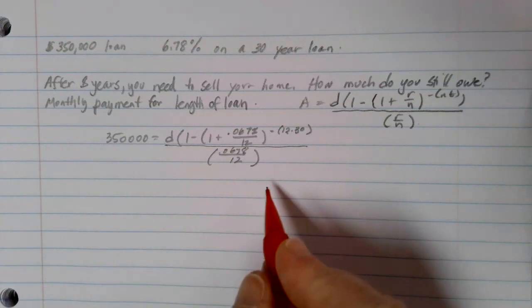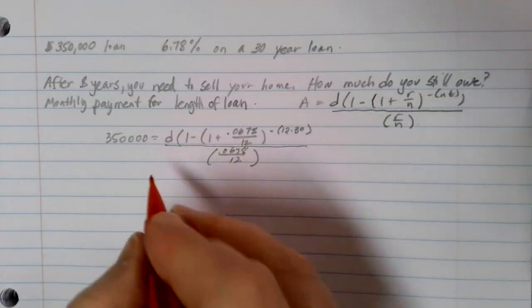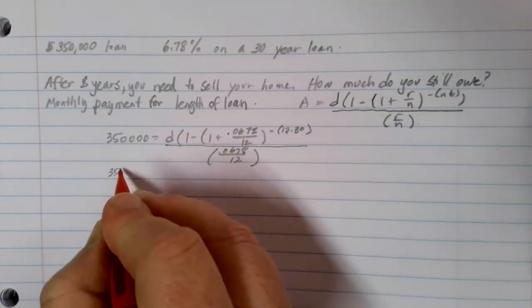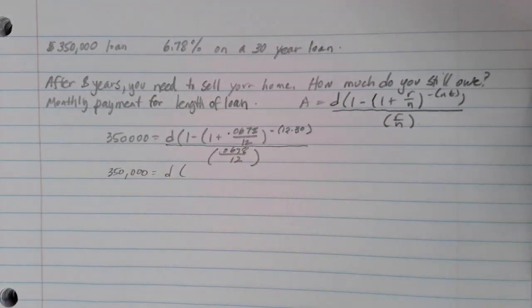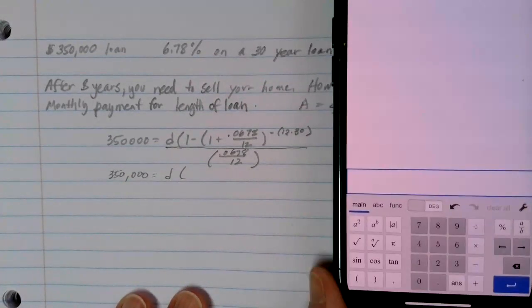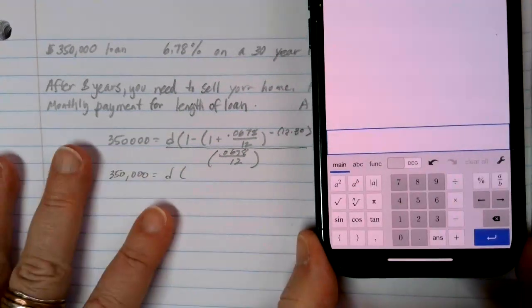And we'll be able to calculate what that monthly payment is. Again, D is not by itself yet. So the first thing we want to do is simplify everything there on the right side of the equation so that we can get a simpler equation problem to work on. All right, we'll pull out our calculator here, and let's see what we get.